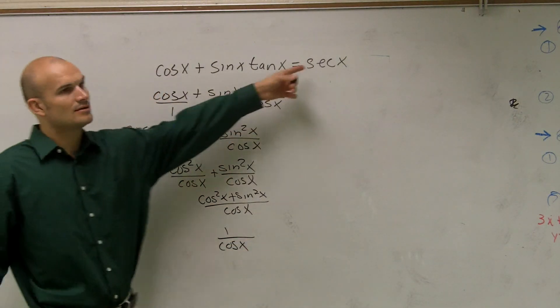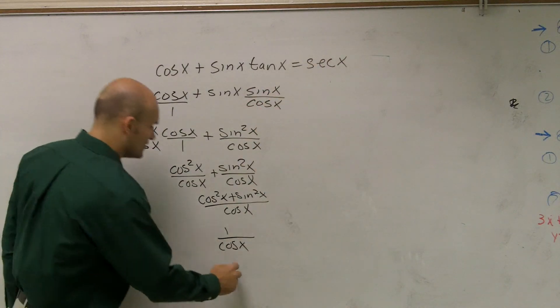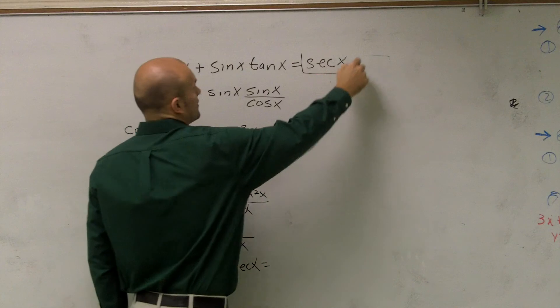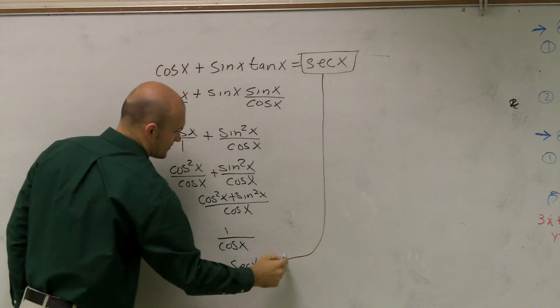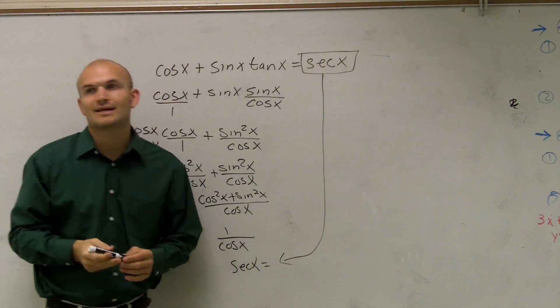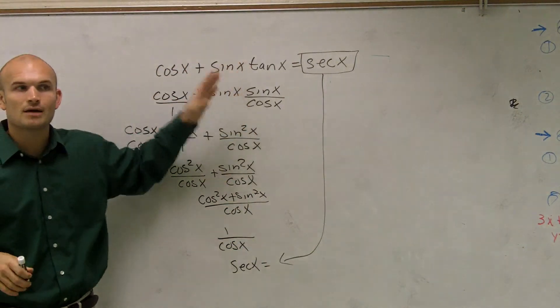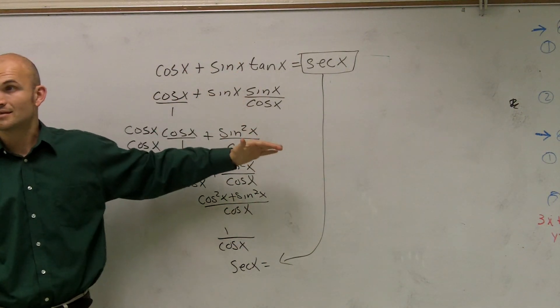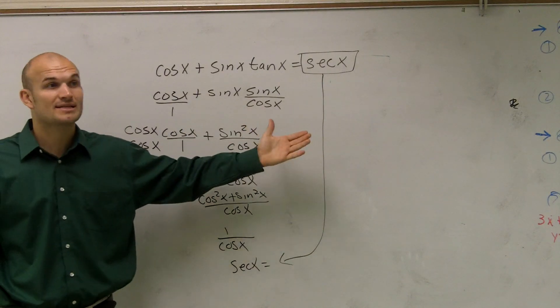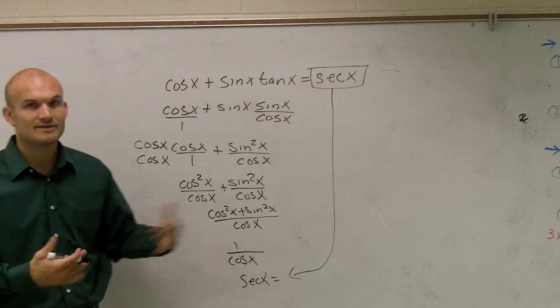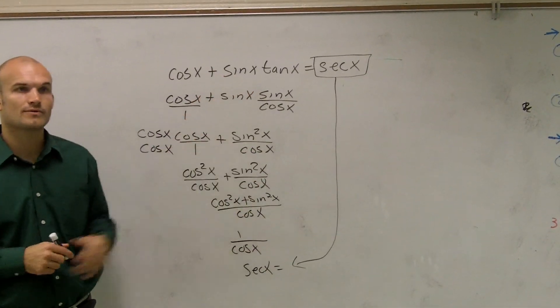Well, guess what? 1 over cosine of x equals secant of x, which equals our original answer over there. So ladies and gentlemen, like I said, I looked through this and I kind of knew the path I wanted to follow. Well, you're going to come up with paths that are going to come to dead ends, or at least you're going to think they're going to come to dead ends. Just try something, see where it's going to work, and then if it doesn't work, try something else to keep on working through it.